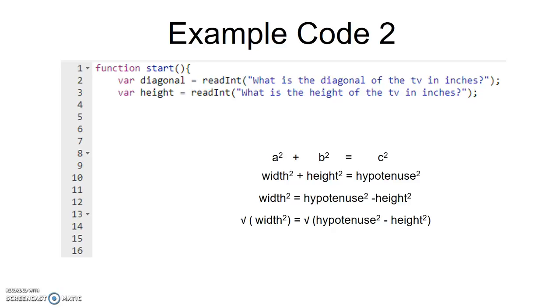So the width is the square root of the hypotenuse squared minus the height squared. That is going to be our math equation to find the width from the diagonal and height.